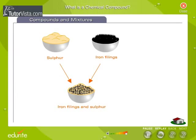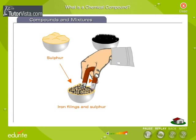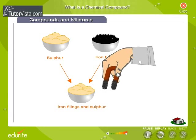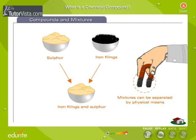Let's compare compounds and mixtures. Combining elements to form a compound is different from just mixing elements together. In a mixture of iron filings and sulfur, for example, each element holds on to its original properties. You can separate the mixture easily by dragging a magnet through it, attracting all the iron filings.